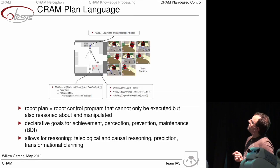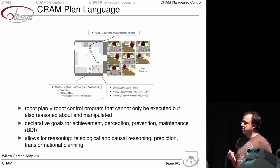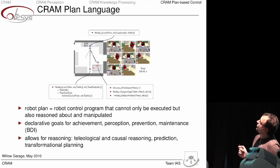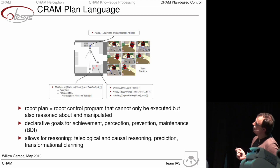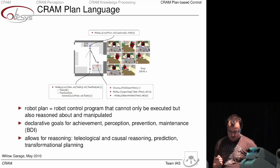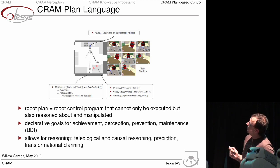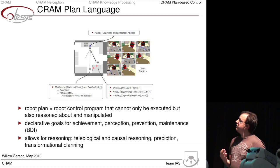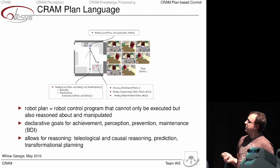An example here shows how to convert an execution trace of such a control language into first-order logic queries. In the simulation, the robot's task was to set the table for two people. The whole system allows for teleological and causal reasoning, predictions, and transformation of plans. In a highly dynamic environment such as a household, this is an absolutely necessary feature.